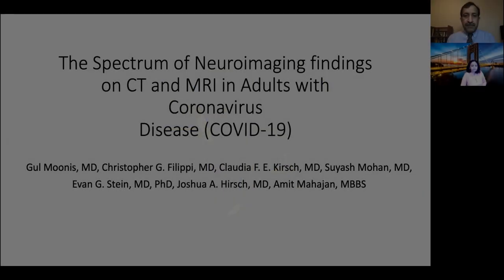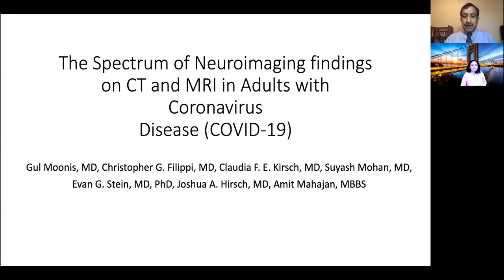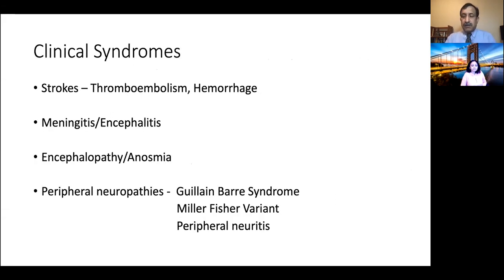Hello all. We're here to discuss the recently published paper in the American Journal of Radiology. The header is 'The Spectrum of Neuroimaging Findings on CT and MRI in Adults with Coronavirus Disease.' Our goal was to summarize the literature as well as describe the findings as seen in the New York City area at the height of the COVID-19 pandemic.